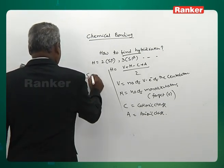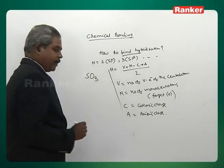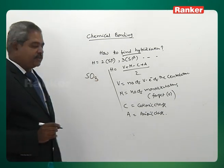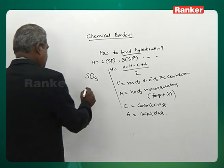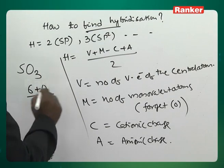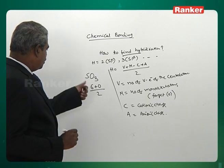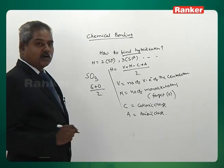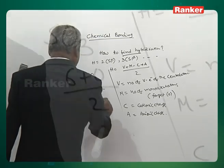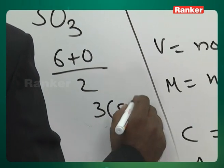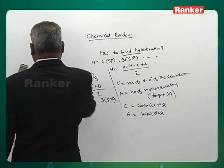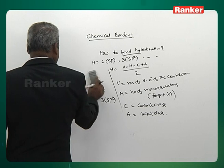SO3: sulfur belongs to the sixth group, V = 6. Oxygens are not considered, so M = 0. H = (6 + 0) / 2 = 3. Hybridization is sp2. You can apply this formula in any number of cases.